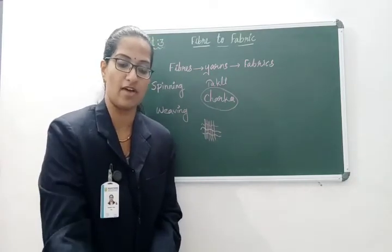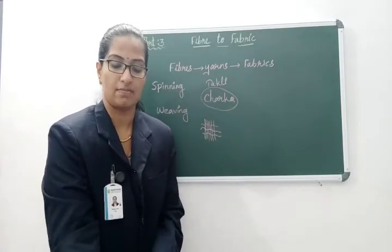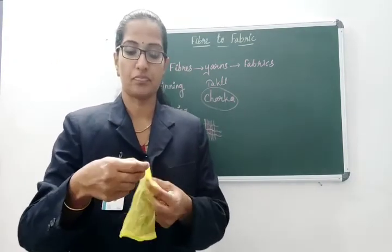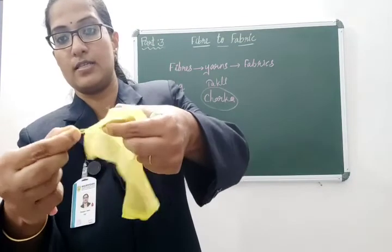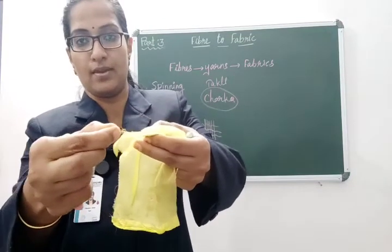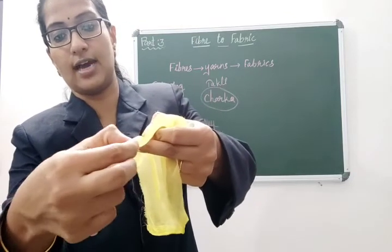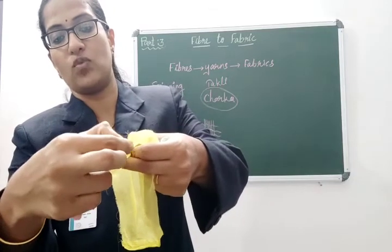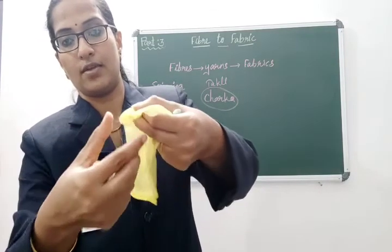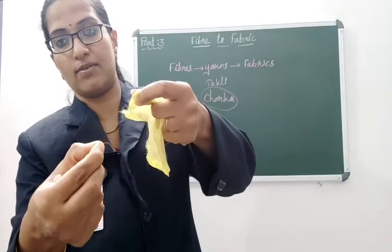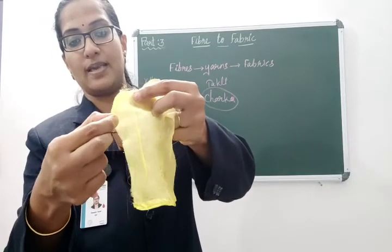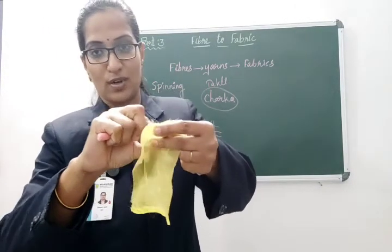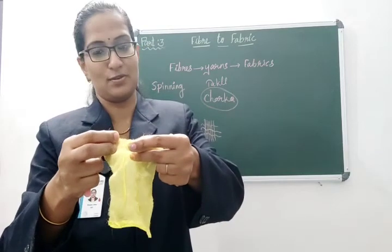I have a small piece of fabric here. Can you see — if I take threads out, I can remove one thread or more than one thread out of this fabric. You can see the threads coming out of the fabric. At the same time you can see a vertical set of yarns and also a horizontal set of yarns.